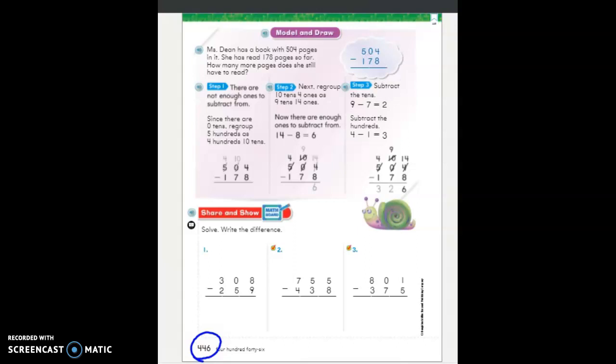So on page 446, this is the steps that we are going to do when there is a 0 in our 10s place. It can get kind of tricky. So pay attention. Slow and steady is how we are going to do it. So it says Ms. Dean has a book with 504 pages. She read 178 pages so far. How many more pages are there still to read? They already did the think bubble. We start with 504. We're taking away 178. And they're showing us the steps.